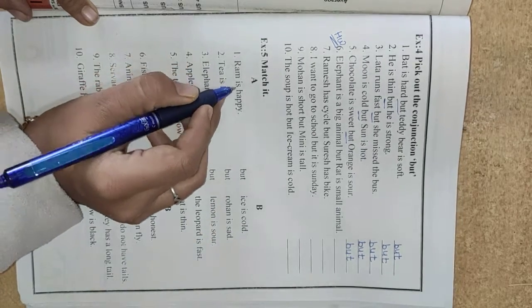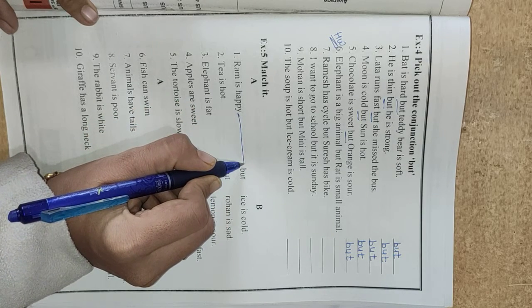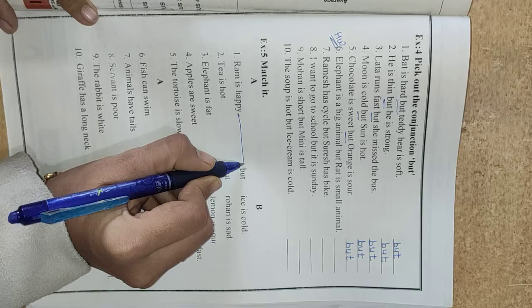Ram is happy but here B part is used. It means they have opposite words in the sentence.